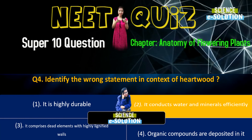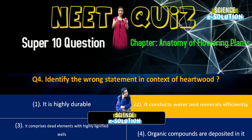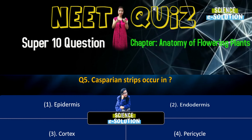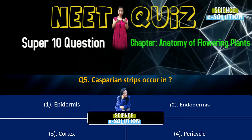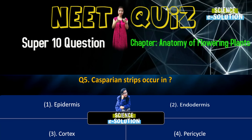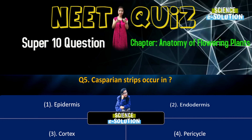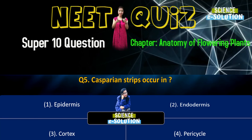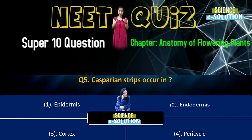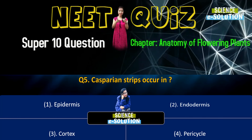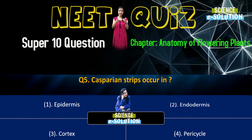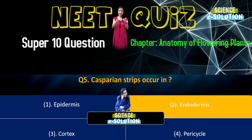Question number two, which was asked in 2017: The vascular cambium normally gives rise to — primary phloem, secondary xylem, periderm, or phalloderm? So the vascular cambium gives rise to secondary xylem. Option number two.